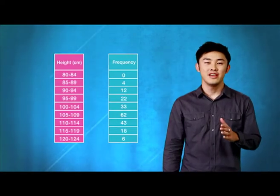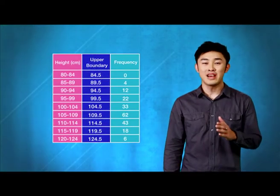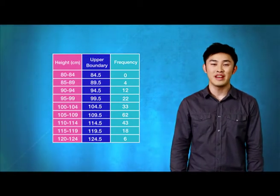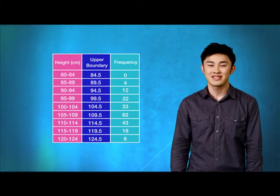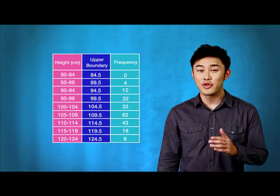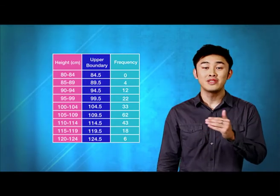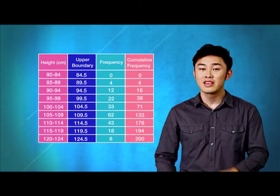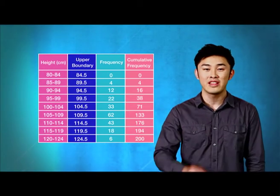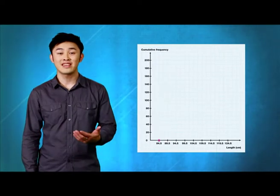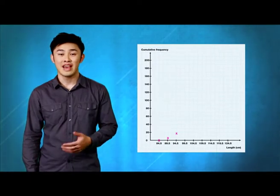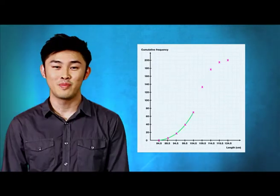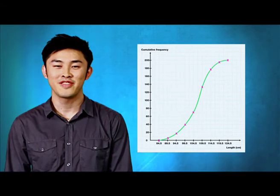In this question, the upper boundaries are found by adding 0.5 to the highest value of each class. Adding the frequency of each class to the frequencies of the previous classes gives you the cumulative frequency. So with length on the x-axis and cumulative frequency on the y-axis, we plot the ogive.